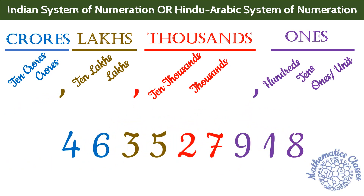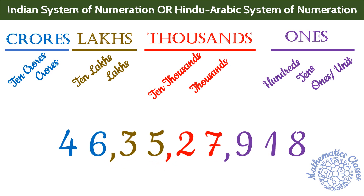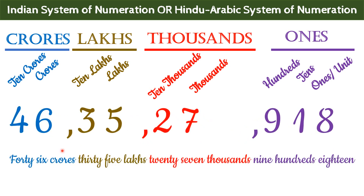Now read this number having nine digits: 4, 6, 3, 5, 2, 7, 9, 1, 8. Similarly, हम left से right जाएंगे, और पहले three digits के बाद comma का use करेंगे, then दो digits के बाद, फिर next two digits के बाद। From this place value chart, we can easily read our number as 46,35,27,918.